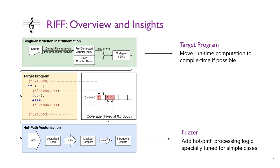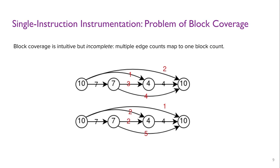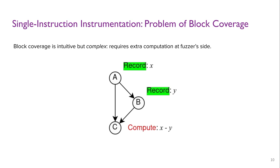To achieve single instruction instrumentation, using block coverage is a natural choice since we cannot perform much computation. However, block coverage cannot represent all the information provided by edge-level coverage. As the figure shows, given 10, 7, 4, 10 as the hit count for four basic blocks, there can be at least two interpretations for edge coverage. Sometimes, block coverage can encode enough information to compute edge coverage afterwards.